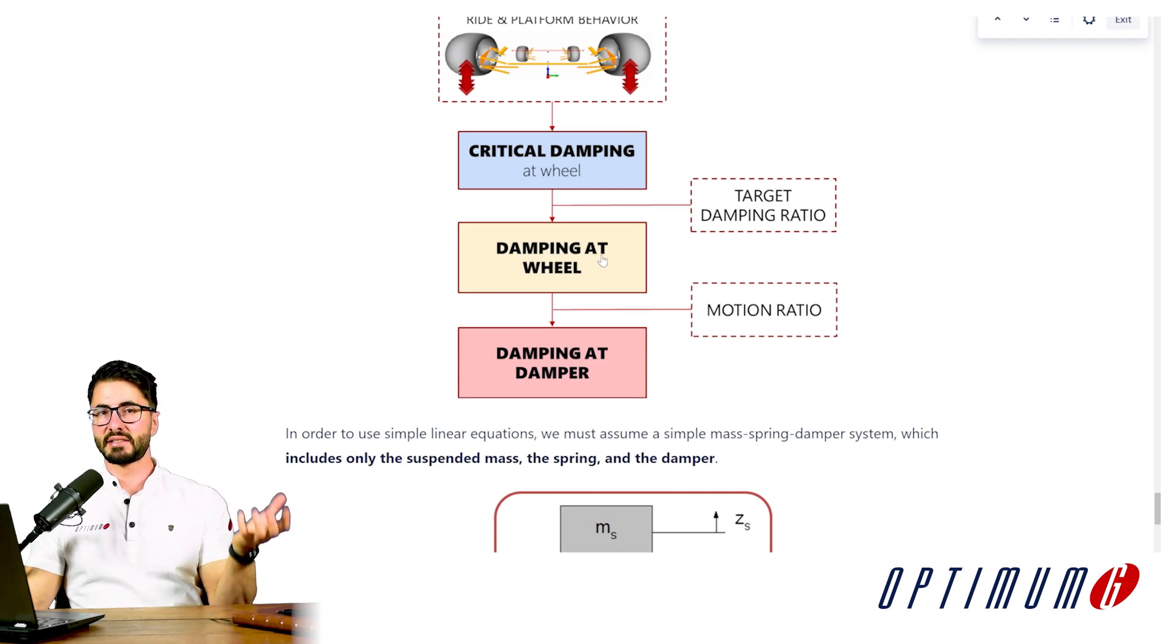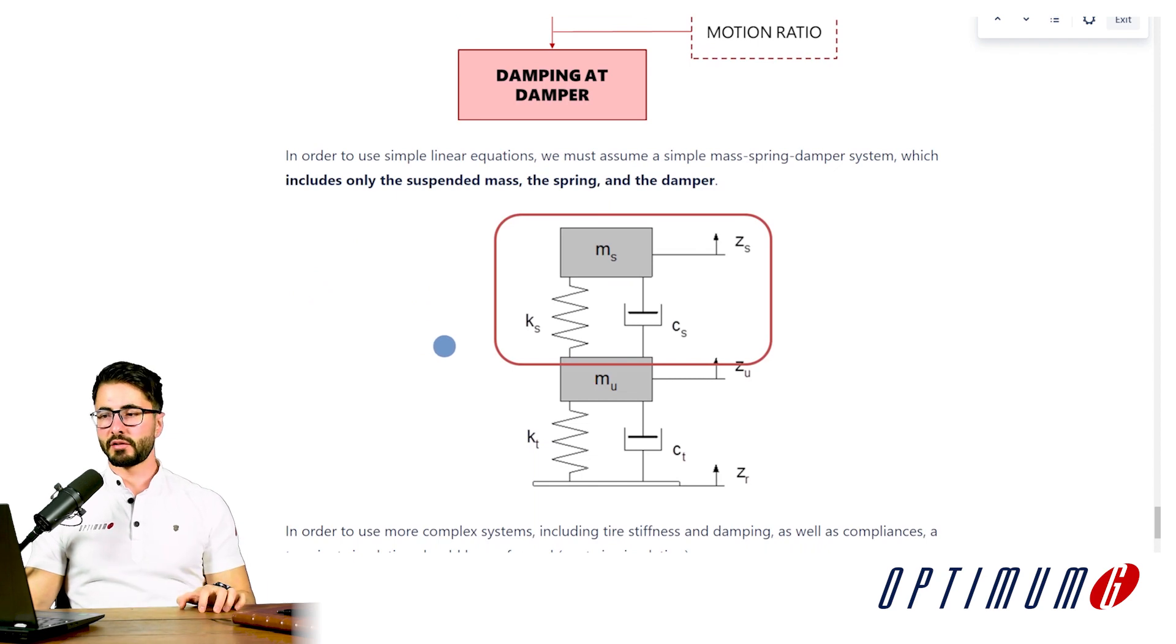Now we are again at the system level and we need to convert from system level to component level, which would be the damper. How do we do that? Again, we will use motion ratio and then we can end up with the damper curves that we need to send to our damper designer.